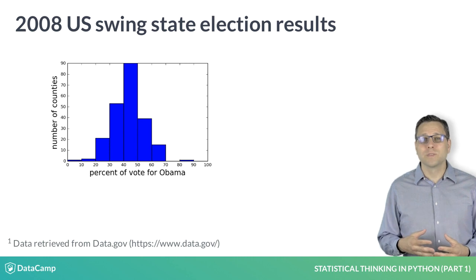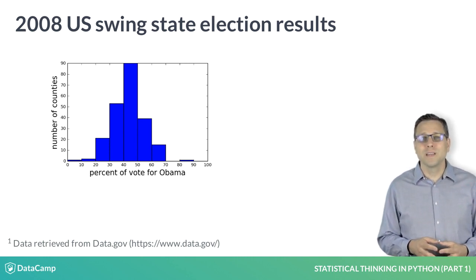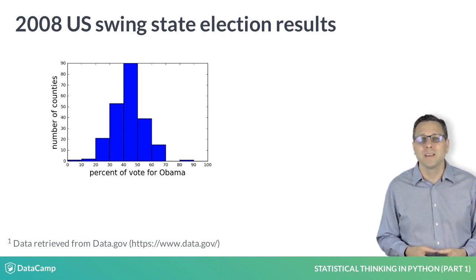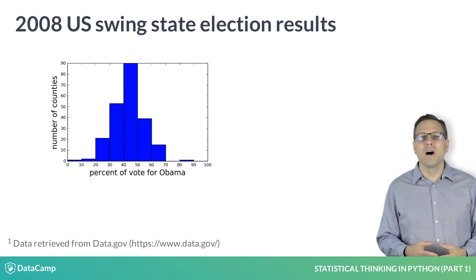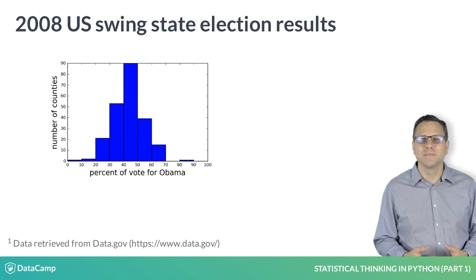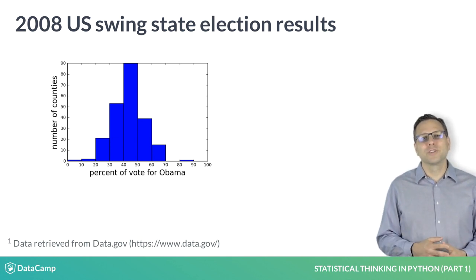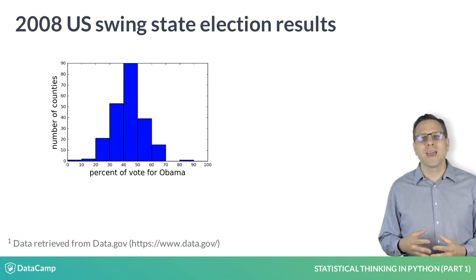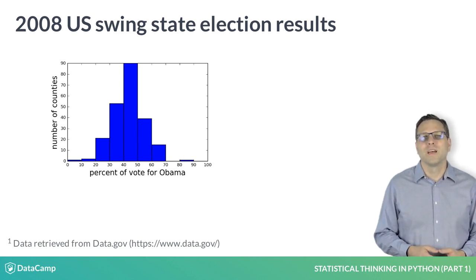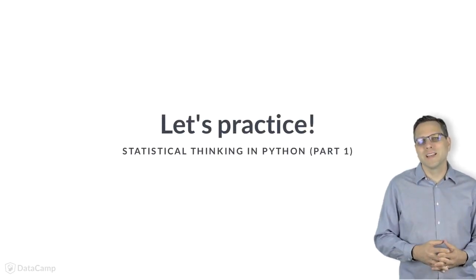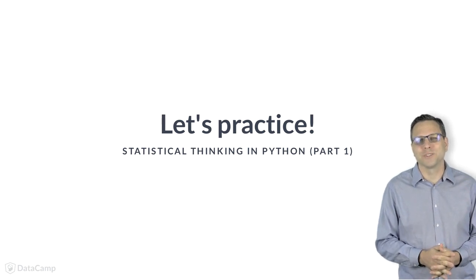Right away, because there is more area in the histogram to the left of 50%, we can see that more counties voted for Obama's opponent, John McCain, than voted for Obama. Look at that — just by making one plot, we could already draw a conclusion from the data. Now, this would have been extraordinarily tedious if we did it by hand, counting in the data frame. Now, let's review some of the basic ideas behind EDA with a couple of exercises.